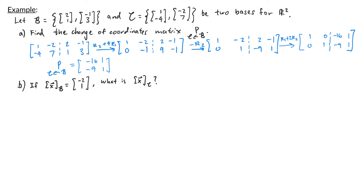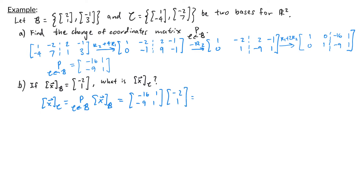In part b, we're given that the B coordinate vector for x is (-2, 1), and we're asked to find the C coordinate vector for x. To do that, we multiply P_{B→C} times the B coordinate vector for x: [-16, 1; -9, 1] * (-2, 1). This gives (-2)*(-16) + 1*1 = 33 on top, and (-2)*(-9) + 1*1 = 19 on bottom. So the C coordinate vector for x is (33, 19).